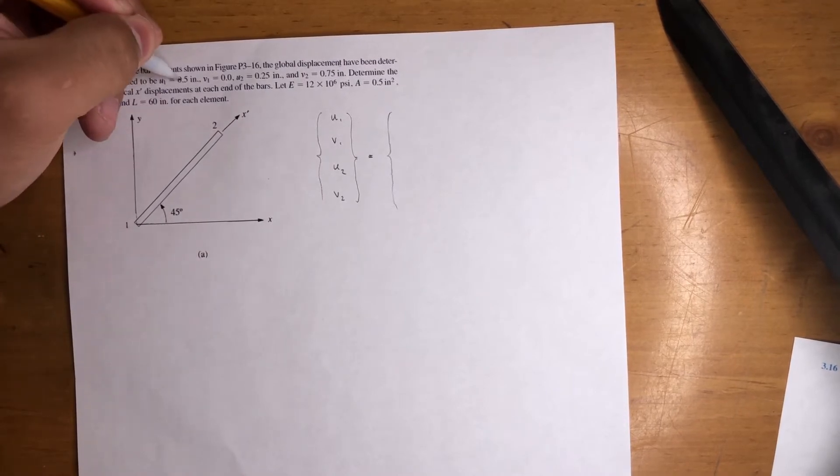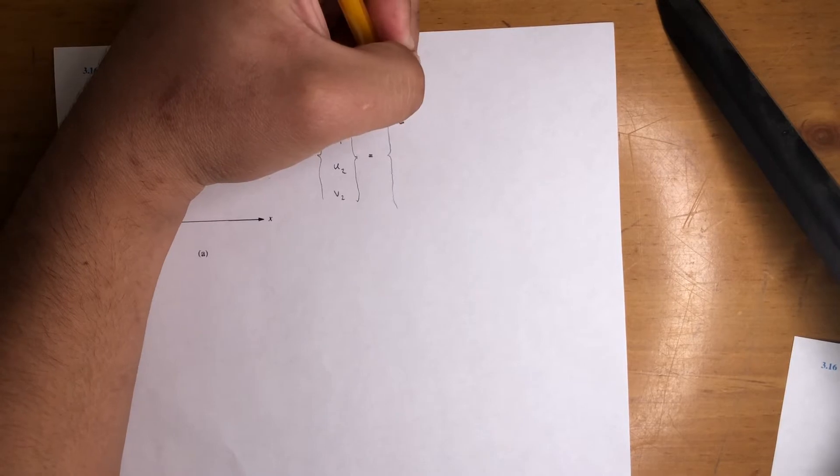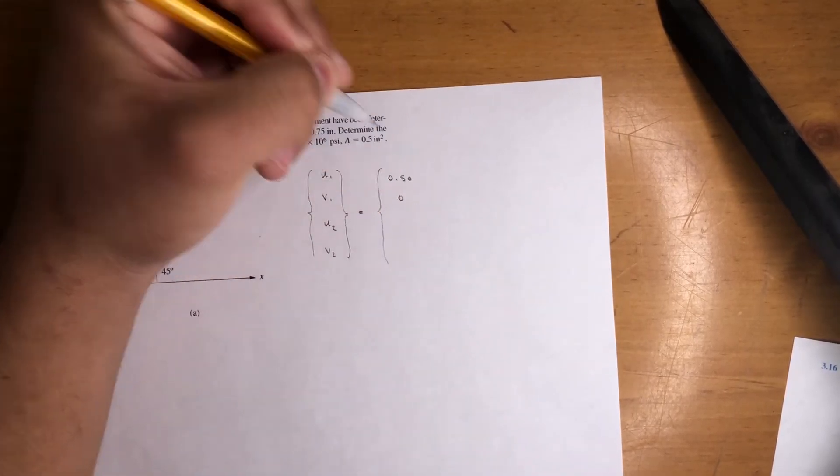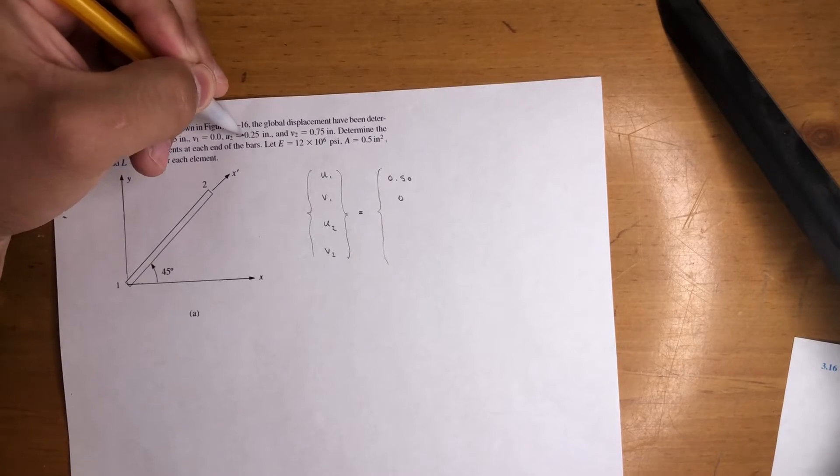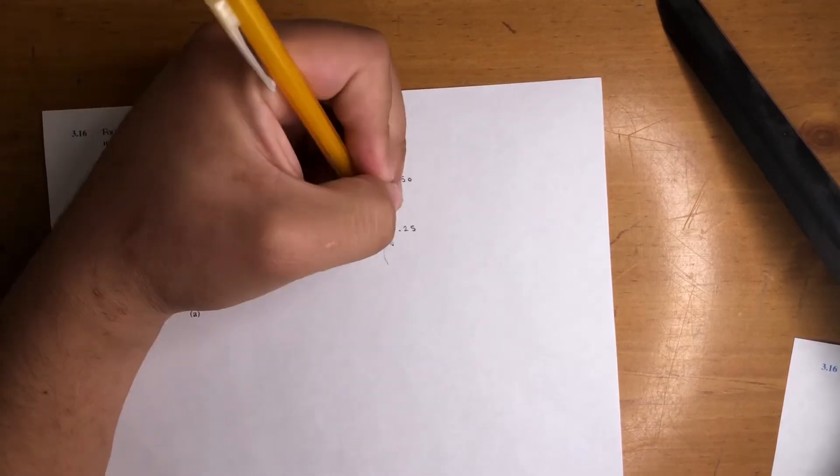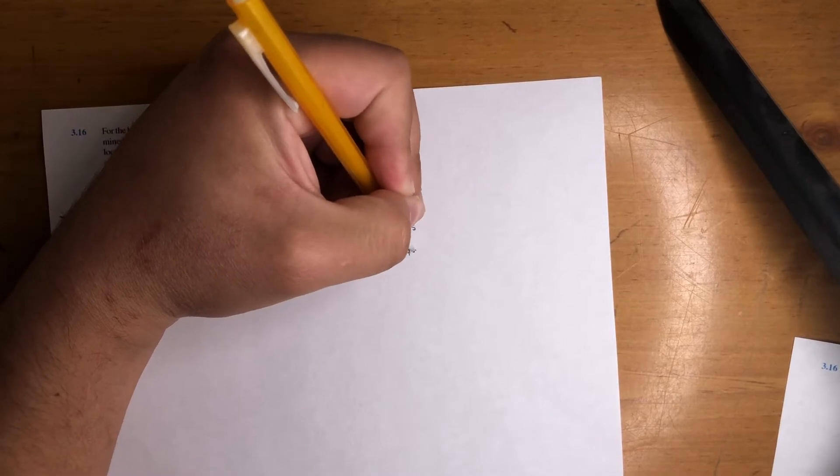So that value is 0.50, so let's put 0.50. Okay, let's do 0, 0.25 for U2, and 0.75 for V2.